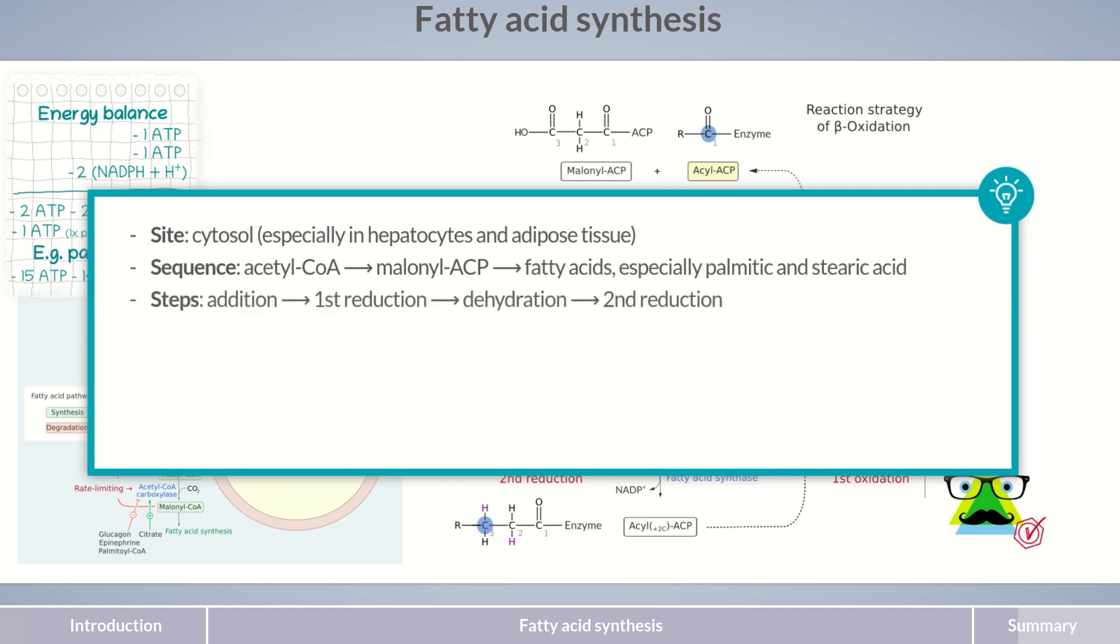The malonyl-CoA units are bound to the growing fatty acid chain in a four-step procedure. The reaction strategy corresponds to reversed beta-oxidation and consists of an addition, first reduction, dehydration reaction, and second reduction.